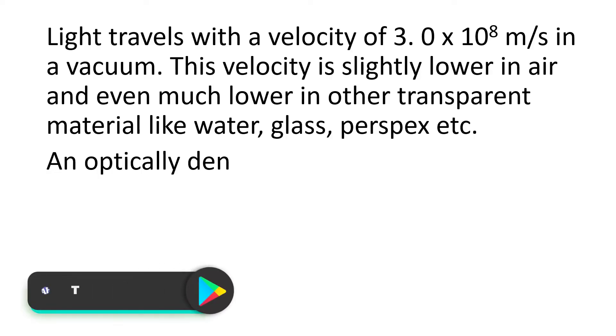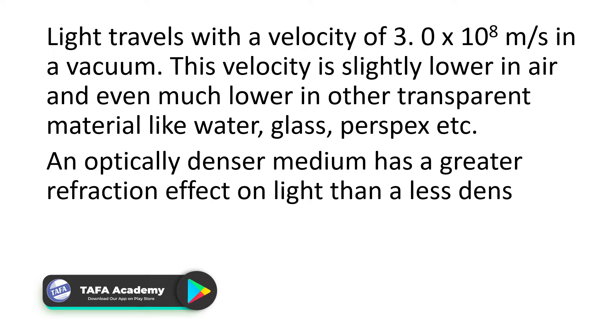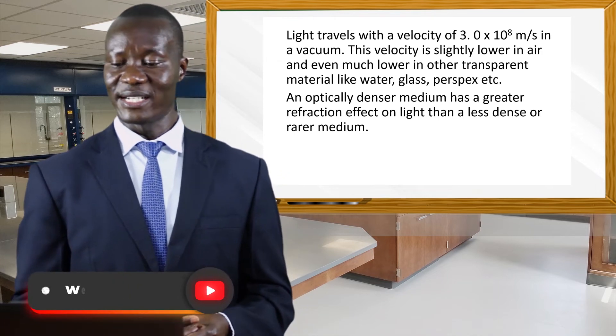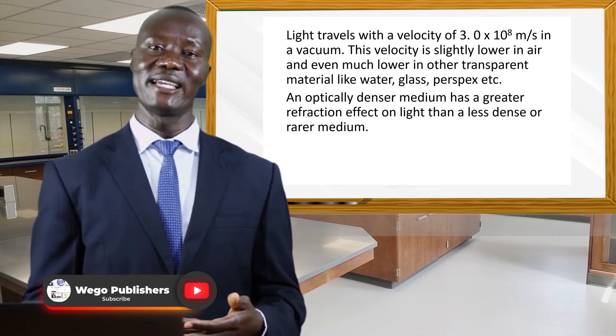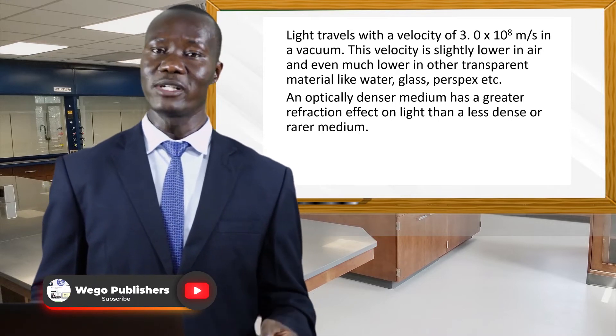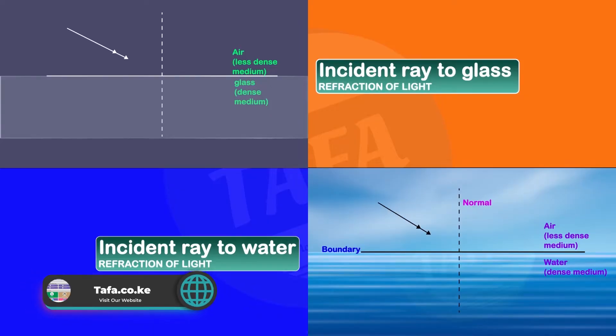An optically denser medium has a greater refraction effect on light than a less dense or rarer medium. For example, glass has a slightly higher refractive index compared to water. When light passes through an air-glass interface, it deviates and suffers greater refraction.